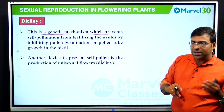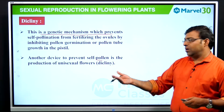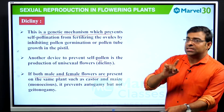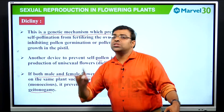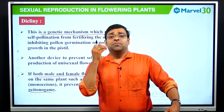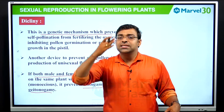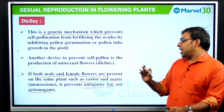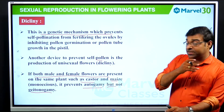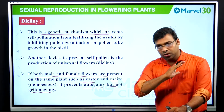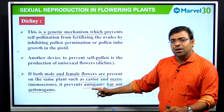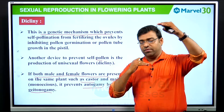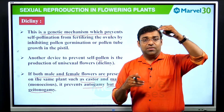Another device to prevent self-pollination is the production of unisexual flowers — either male or female. If both male and female flowers are present on the same plant, such as in castor and maize, it is called monoecious. This prevents autogamy but not geitonogamy — because geitonogamy is when the anther of one flower fuses with the stigma of another flower of the same plant.